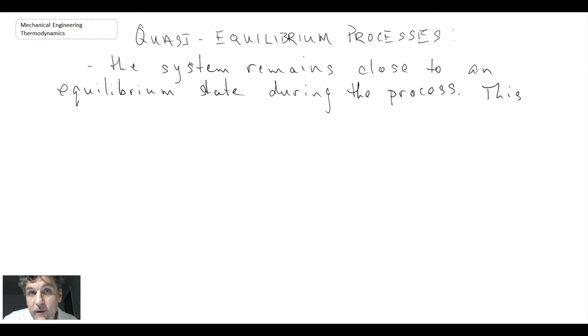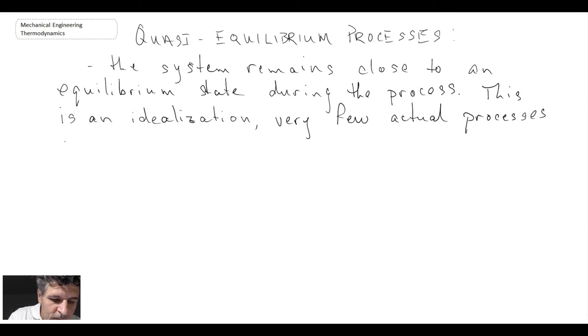Now this is an idealization and really no cycle that we're really going to be analyzing will be in quasi-equilibrium. So if that's the case why should we study them? If they don't really exist why are we studying them?